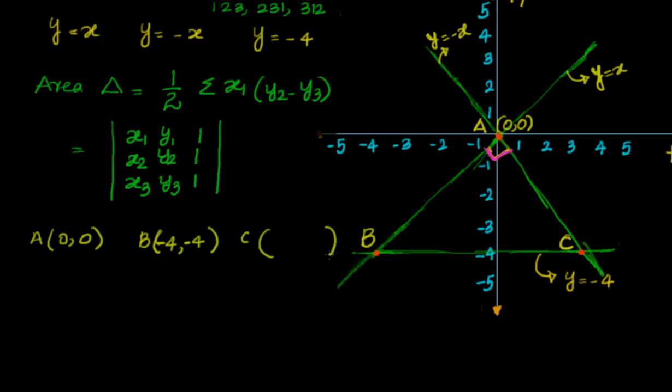Let's go to now C. C is the point of intersection of y equal to minus 4 and y equal to minus x. So y is minus 4 is already given to us. y equal to minus x, so x equal to 4.